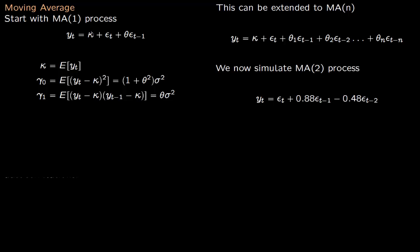So you have y_t is kappa. Kappa is some constant, then you have this epsilon_t and theta epsilon_{t-1}. So both this epsilon_t and epsilon_{t-1} come from the same normal distribution. Mean is 0 and then some variance is there, sigma squared.